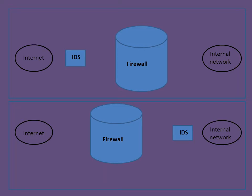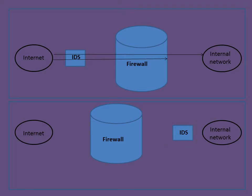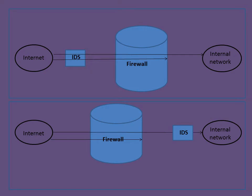Network IDS can be placed between the internet and firewall, or between the firewall and internal network. If placed between internet and firewall, IDS will be able to monitor and record all intrusion activity. However, if placed between firewall and internal network, any activity blocked by the firewall will not pass through IDS and such attacks will not be recorded.